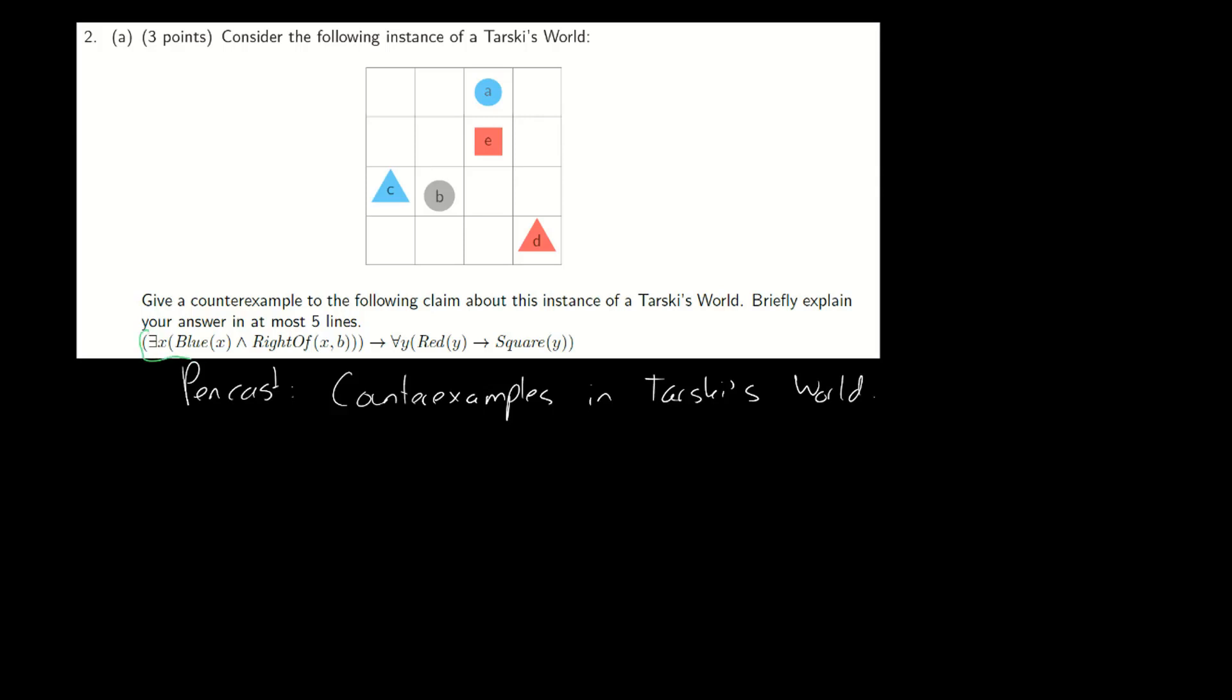Now the claim here is an implication. It has an antecedent which we circled in green here because it's something we need to make true, and it has a consequence which we circled in red because we have to make that thing false.